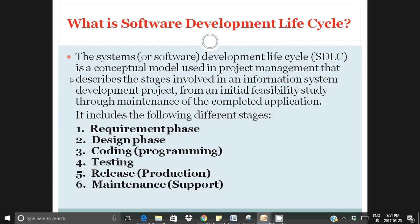To recap at a high level: software development starts with the requirements phase, where business analysts gather and document requirements. Then comes the design phase, where the software or solution architect designs the application. Then programmers develop the software. Once developed, testers test the application. When testing is done, the application is released to the market — that's the release or production phase. When the application is in production, a maintenance and support team looks after any issues.